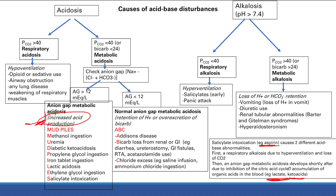So aspirin causes respiratory alkalosis first, then anion gap metabolic acidosis. You can remember this because respiration happens a lot faster than metabolization and metabolic disturbances — you can breathe a lot faster than it takes for your body to break down things and start producing lactic acid. So the thing that happens first is the respiratory alkalosis, and next is the anion gap metabolic acidosis. That is our talk on acid-base disturbances — again, very high yield.